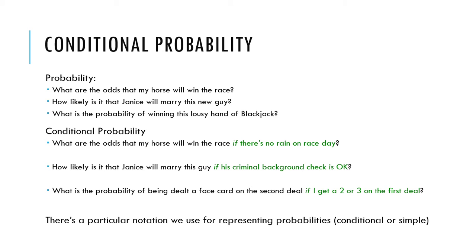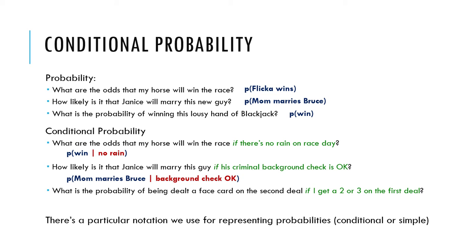Now there's a particular notation we use for representing probabilities. We do P and then parentheses, and then the thing we're interested in the probability of. Sometimes we're really technical and we'll say P(A₁), whatever. But sometimes we're kind of semantic — we'll say 'probability that Flicka wins,' so P(whatever's in the parentheses) is the probability of that thing happening. With conditional probability, we use this pipe — this vertical bar — and it means 'given' or 'given that' or 'if.' So: the probability of a win given no rain; the probability of mom marrying Bruce given Bruce's background check is okay; the probability of getting a face card given a 2 or 3.